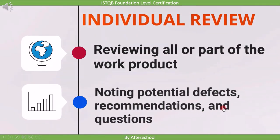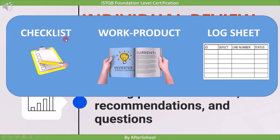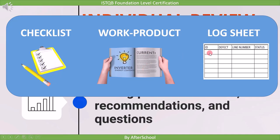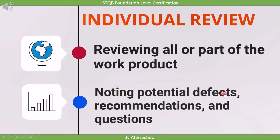In individual review, the reviewer reviews all or part of the work product. The checklist contains questions — the reviewer checks the work product against each question. For example, if the question is 'Are all words spelled correctly?', the reviewer checks for spelling errors and documents any found in the log sheet. In addition to defects, recommendations and questions can also be entered in the log sheet.